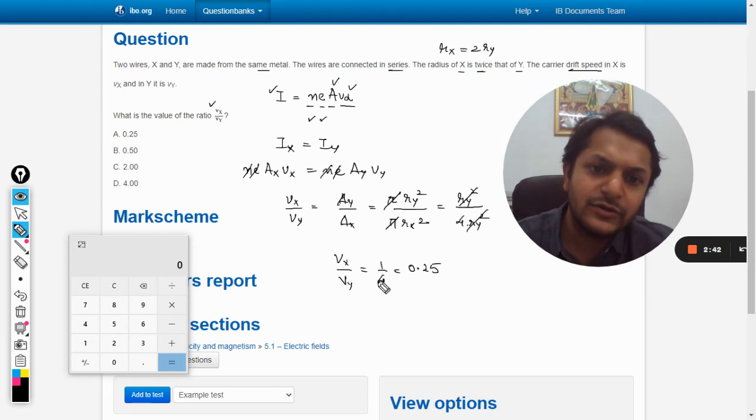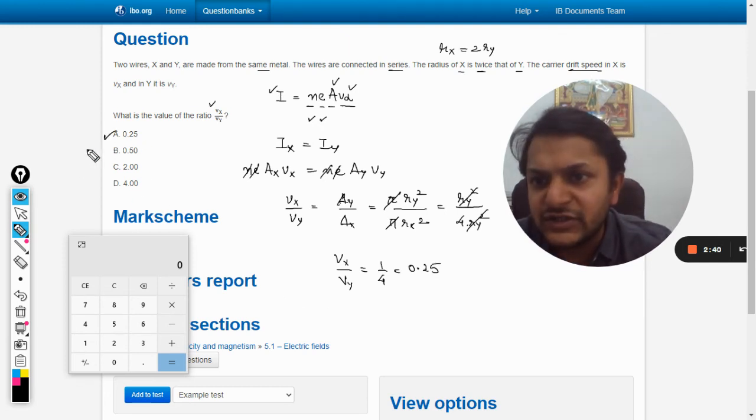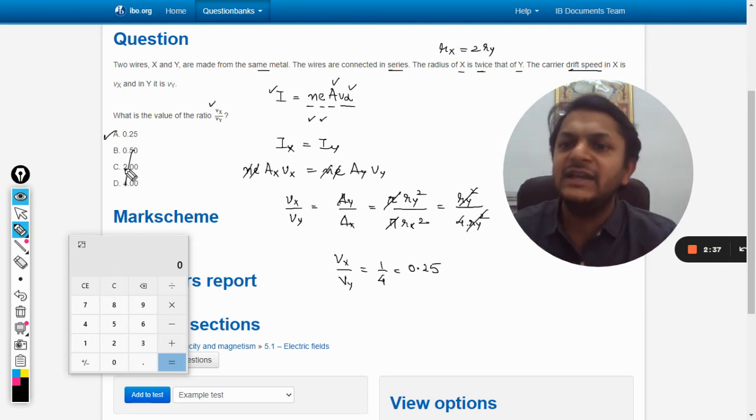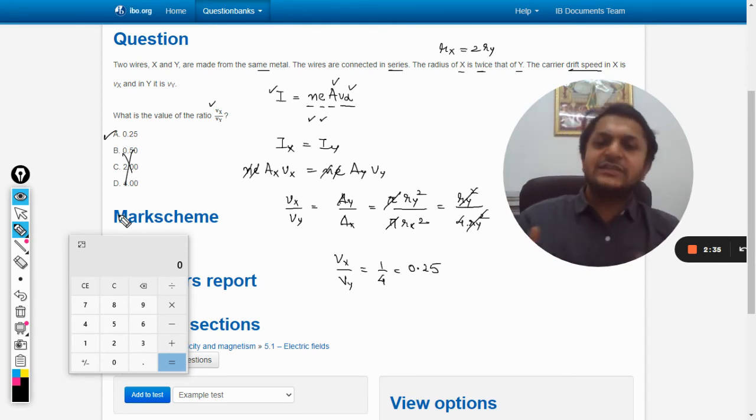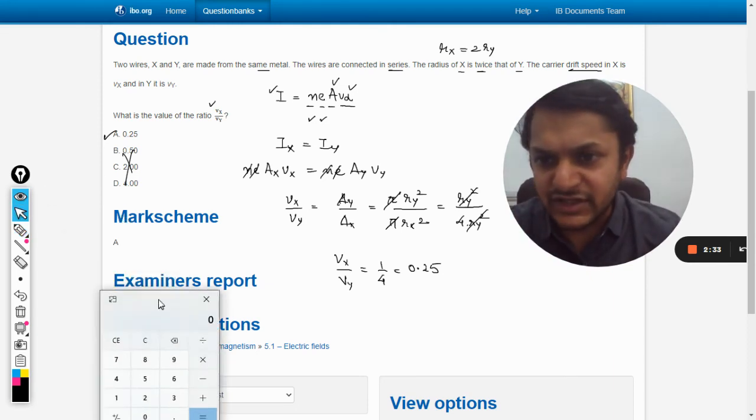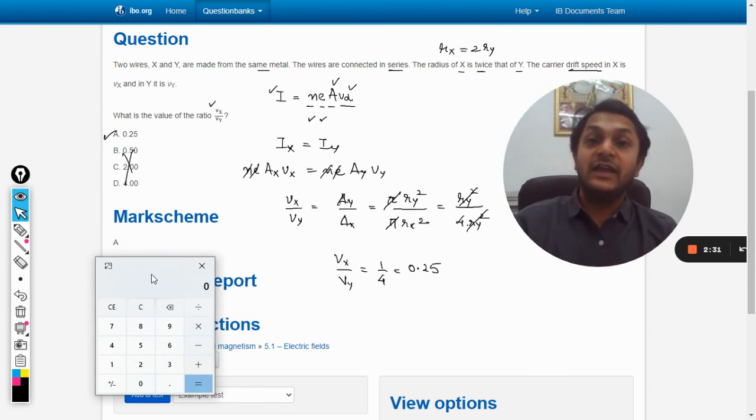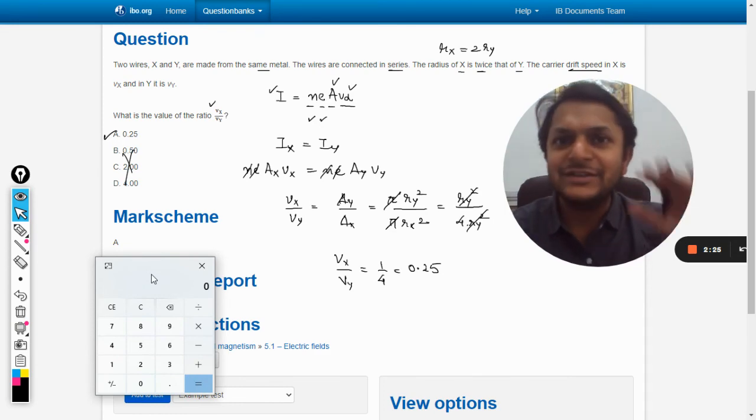Or 0.25. From these options we have A as the right answer, B C and D are the wrong ones. Let us verify this from the mark scheme and yes the answer is A, we are absolutely right. Any problem in this topic please let me know in the comment section. All the best, bye.